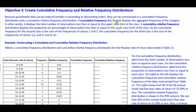A cumulative frequency distribution displays the aggregate frequency of the category. In other words, it displays the total number of observations less than or equal to the upper class limit of the class. A cumulative relative frequency distribution displays the proportion or percentage of observations less than or equal to the upper class limit of the class.